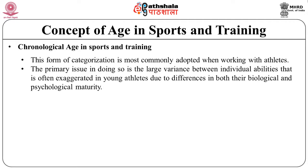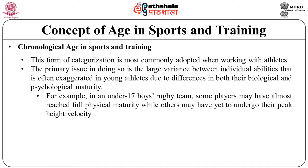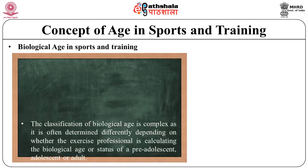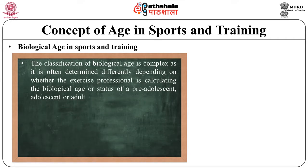The primary issue with categorizing athletes by chronological age is the large variance between individual abilities, often exaggerated in young athletes due to differences in biological and psychological maturity. For example, in an under-17 boys' rugby team, some players may have almost reached full physical maturity while others may not yet have undergone their peak height velocity. This can result in larger variance in physical and psychological maturity, limiting physical potential, potentially increasing risk of injury, reducing intergroup competition, and generating distractions, failing to cater to individual training needs.